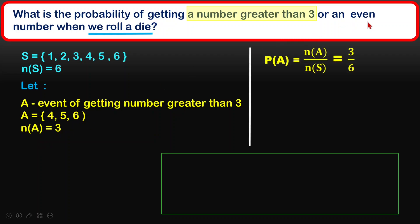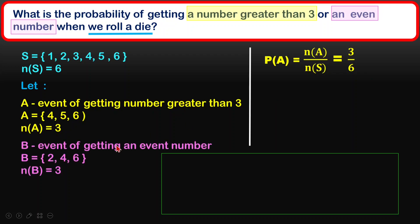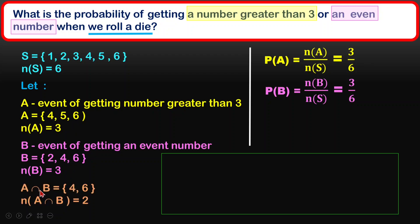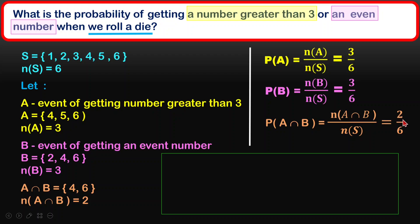We want an even number too. The probability of getting a number greater than 3 is 3 over 6. The event of getting an even number gives us {2, 4, 6}, and the probability is 3 over 6. Now checking the intersection: both sets share 4 and 6, so the intersection of event A and event B is {4, 6} — 2 elements — giving P(A∩B) = 2 over 6.